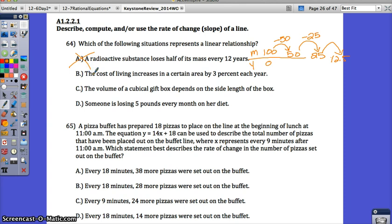Option B: The cost of living increases in a certain area by 3% each year. Think about it. The first year, maybe the cost of living is $100. If it increases by 3%, we would do 100 times 0.03. That would give me 103 now. Then the next year, this new number would increase again by 0.03. Is that going to be a constant rate? No, it's changing each year and it's starting at a different amount. So that is also not linear.